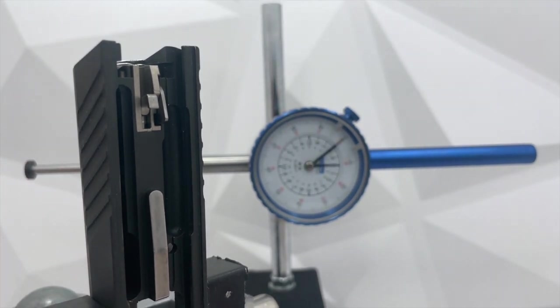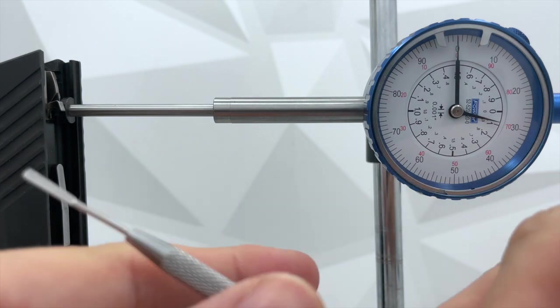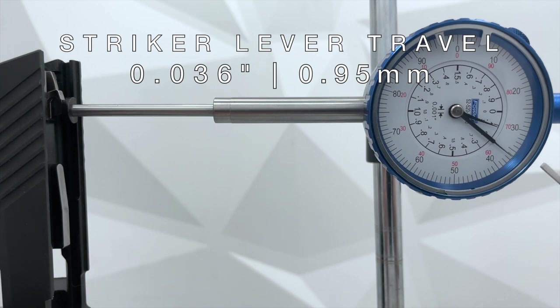So okay, let's set this up and test this. Okay, so the dial indicator is set to zero. And we'll get our first test result now. 0.036 inches.